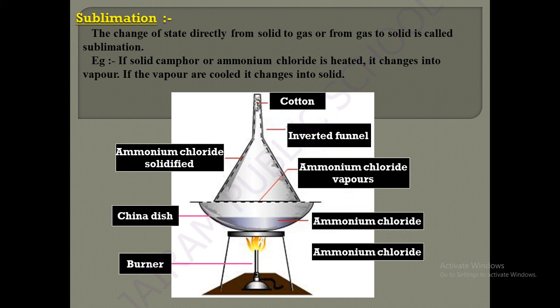To demonstrate sublimation, take camphor or ammonium chloride in a china dish, close it with an inverted funnel, and seal the mouth of the funnel with cotton. Heat the china dish with a burner. After some time, smoky material rises and solidifies on the sides of the inverted funnel — gases converted into solid without becoming liquid. This is the sublimation process.